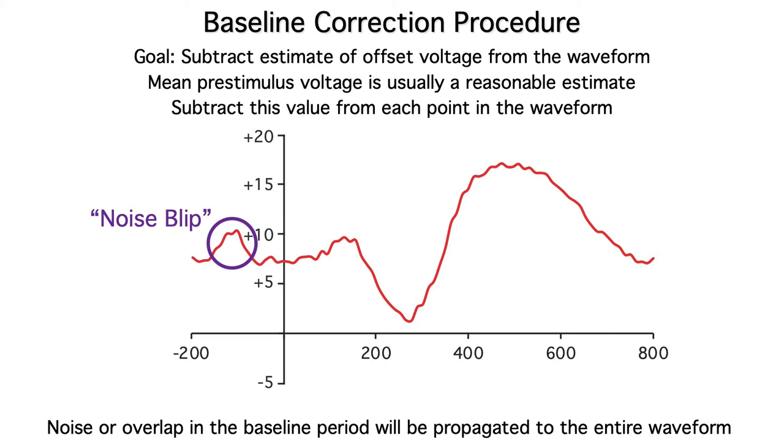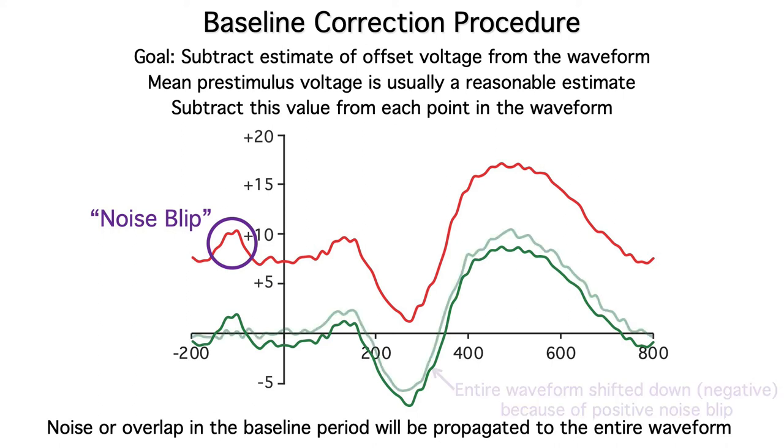This positive noise blip causes the estimate of the offset to be too positive, and when we subtract this too positive value from the whole waveform, the waveform is shifted down by too much. See how the baseline corrected waveform with the noise blip is shifted too far down? Noise like this is equally likely to be positive or negative, but it can still be a problem. The key here is that noise during the pre-stimulus baseline period impacts our measures of the ERP components that are triggered by the stimulus.